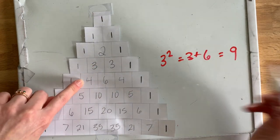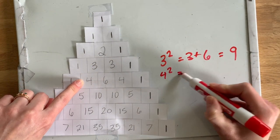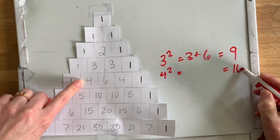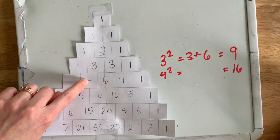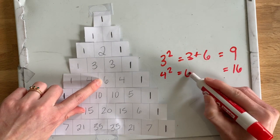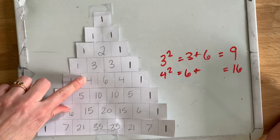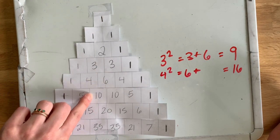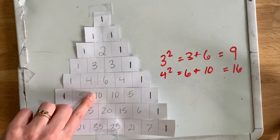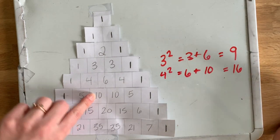Let's see if it works here. 4 squared. 4 times 4 is 16. So next to the 4 is a 6, and diagonal from the 4 is a 10. 6 plus 10 is 16.